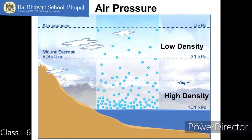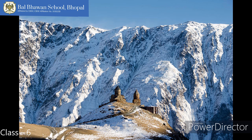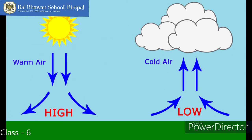The density of the atmosphere varies with height. It is maximum at sea level and decreases rapidly as we go up. The temperature also decreases as we go upwards. The atmosphere exerts pressure on the Earth, and the air moves from high pressure to low pressure areas.